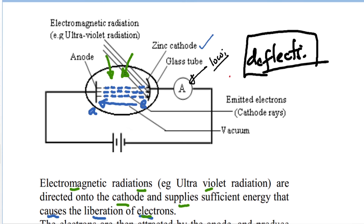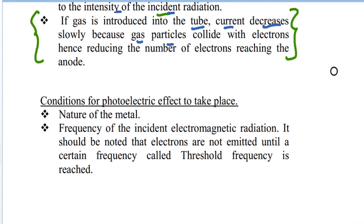If air or gas particles are introduced inside the tube, the electrons released from the cathode will collide with those gas particles. This means fewer electrons reach the anode, and the amount of current registered will reduce — it keeps decreasing. That is why the tube is kept as a vacuum.